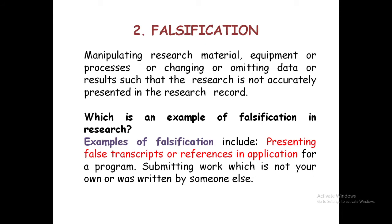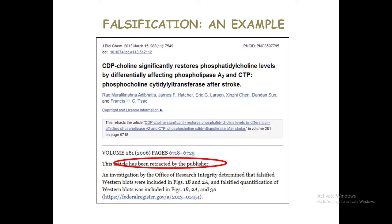Number 2 is falsification: manipulating research materials, equipment or processes, or changing or omitting data or results such that the research is not accurately presented in the research report. Which is an example of falsification in research? Examples of falsification include presenting false transcripts or references in applications for a program, or submitting work which is not your own or was determined by someone else. Here is an example of falsification showing a publication title.